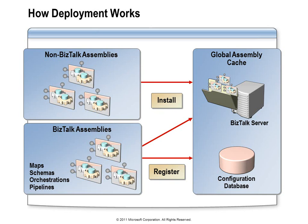The BizTalk deployment tools know how to examine an assembly and identify any BizTalk artifacts that it contains. So whether those are schemas, maps, pipelines, or orchestrations, the deployment tool will find those and register those with the management database. Once the BizTalk artifacts are registered, that assembly will need to be installed in the GAC of each server in the BizTalk group that needs to make use of it. Now if your application includes assemblies that do not contain BizTalk artifacts, those assemblies simply need to be installed in the GAC of each server that will be using them.